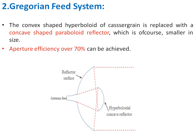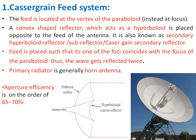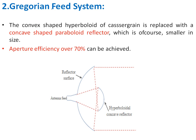The second feed system is the Gregorian feed system. It is very similar to the Cassegrain feed system, but instead of a convex hyperboloid reflector at the focus point, it uses a concave reflector of smaller size. The convex-shaped hyperboloid of the Cassegrain is replaced with a concave-shaped hyperboloid reflector. This improves the aperture efficiency to nearly 70 percent.